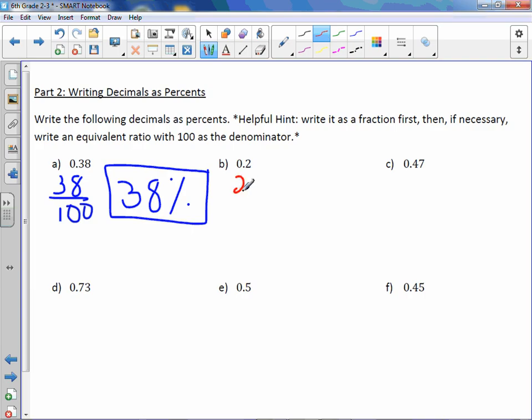Letter B is 2 tenths. Is the denominator 100? It is not. So let's make it 100. Let's multiply 10 by 10 to get 100, and we'll do the same to the numerator and we will get 20 over 100. Now that it's 100 as the denominator, I can look at the numerator, which is simply 20%.